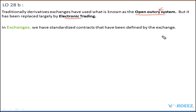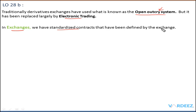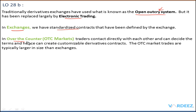Now, if you want to trade on the derivatives market, where do you go? There are two options. The first is exchanges — in the US we have the New York Stock Exchange and NASDAQ; in India we have the NSE and Bombay Stock Exchange. You can go to an exchange and get into a derivatives contract. What's special about exchanges is that they have standardized contracts with terms and conditions already defined by the exchange.